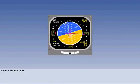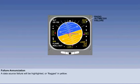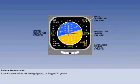Finally, let's look at E-ADI failure enunciations. Should a signal from a data source fail, the failed data source will be highlighted or flagged in yellow. Here, we can see failure enunciations of the radio altimeter, the glide slope signal, the localizer, and the speed computer.